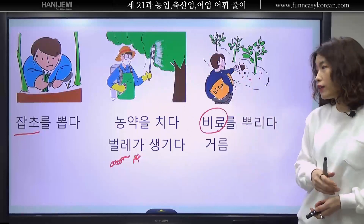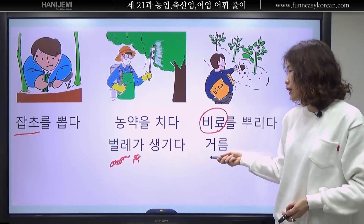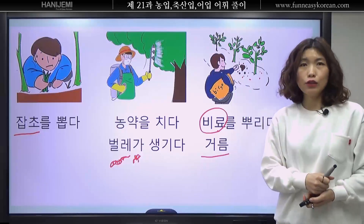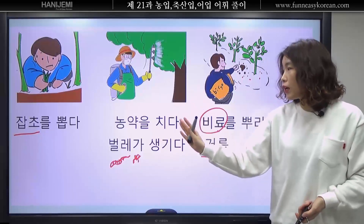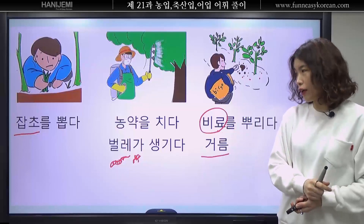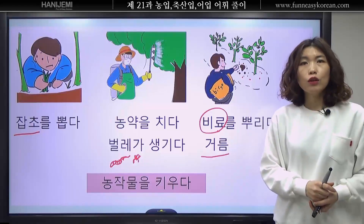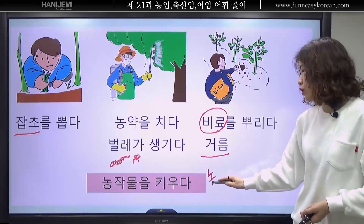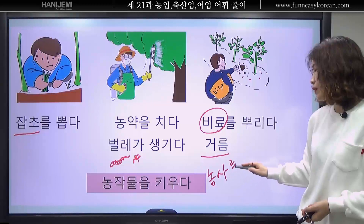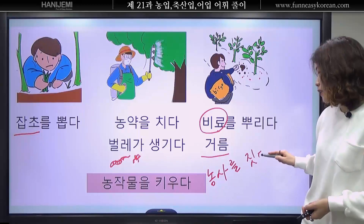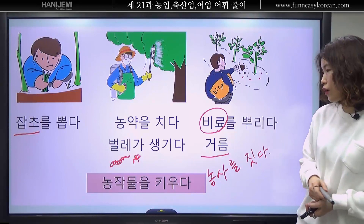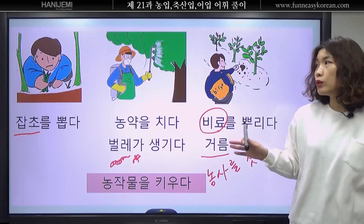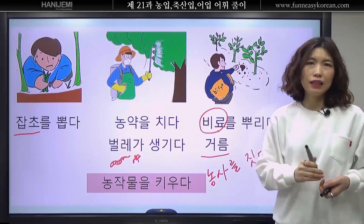이런 거 모두 다 뭐 하는 거예요? 잡초를 뽑다, 농약을 치다, 비료를 뿌리다 — 모두 다 농작물을 키우다, 농사를 짓다예요. 농작물을 키우다 하고 같은 말이 농사를 짓다예요. 농사를 지을 때 이렇게 많은 일을 합니다.